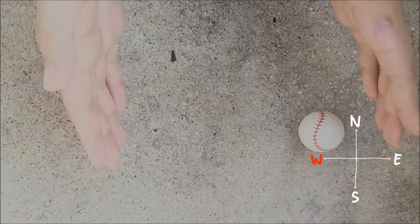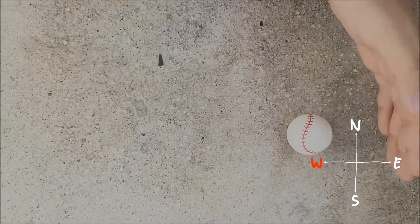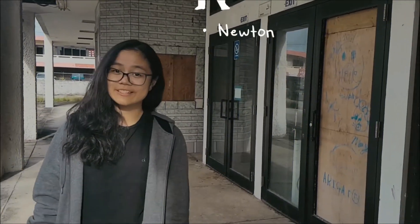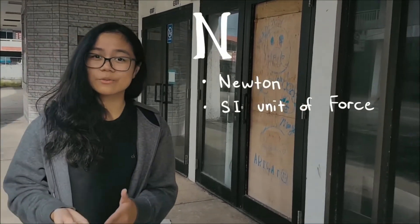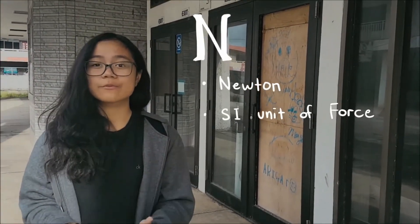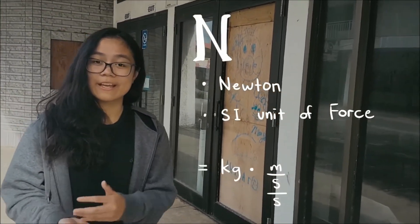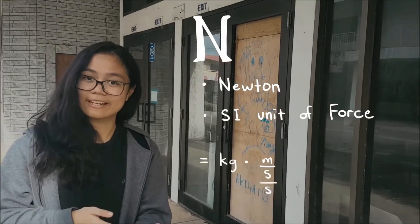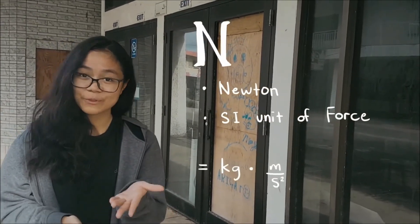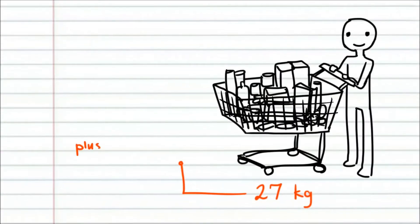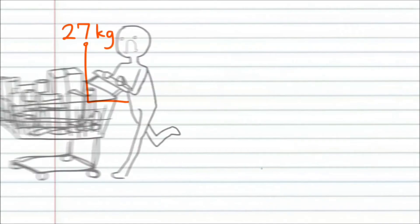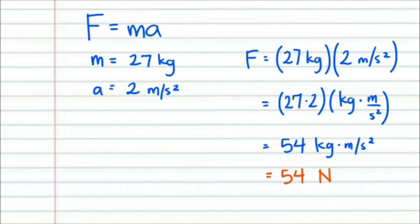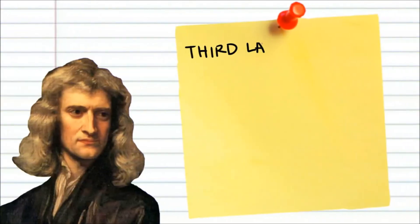So if I take this ball and I push it to the west, it will move to the west. Surprisingly, the Newton is the SI unit of force. It is equal to the force that would give a mass of one kilogram an acceleration of one meter per second squared. If you need to buy food items in a hurry, just take the mass of the cart and its acceleration, multiply the two to get the force required to push the cart.